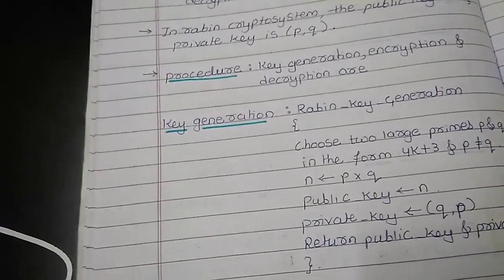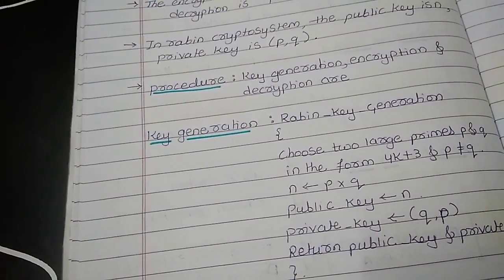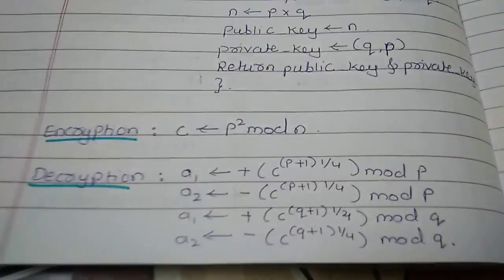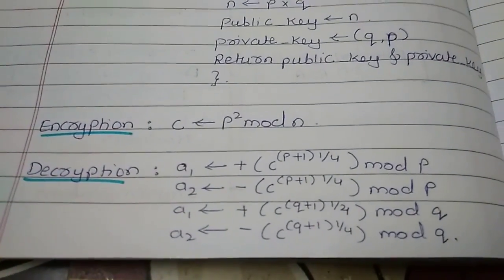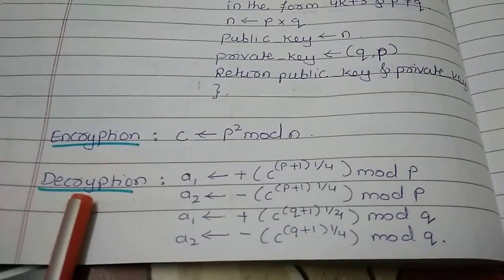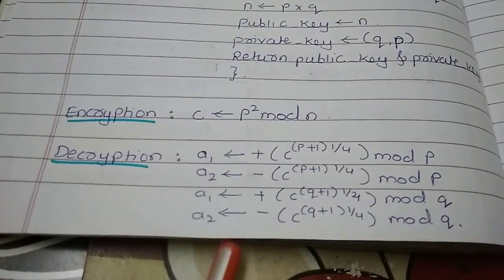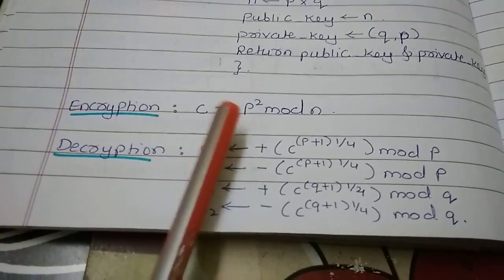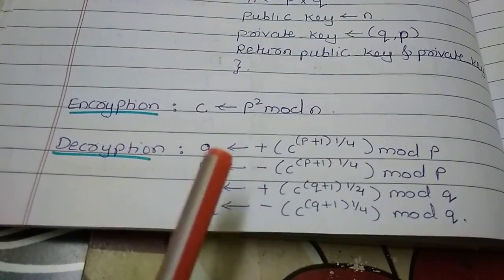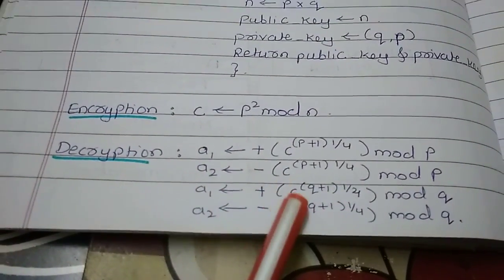So for encryption we are using the formula as I have told you P square mod N. And the decryption is going to give you four different values. And out of this four different plain text now it is work of the receiver to identify the actual plain text sent by the sender.